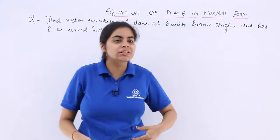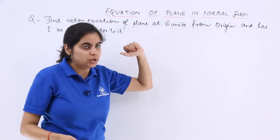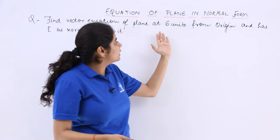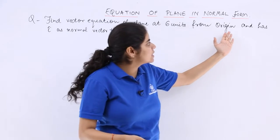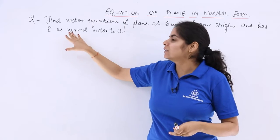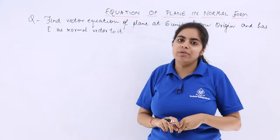So we have a question under the topic of equation of plane in normal form. It says find the vector equation of a plane at a distance of 6 units from origin and has i vector or i cap as the normal vector to it.